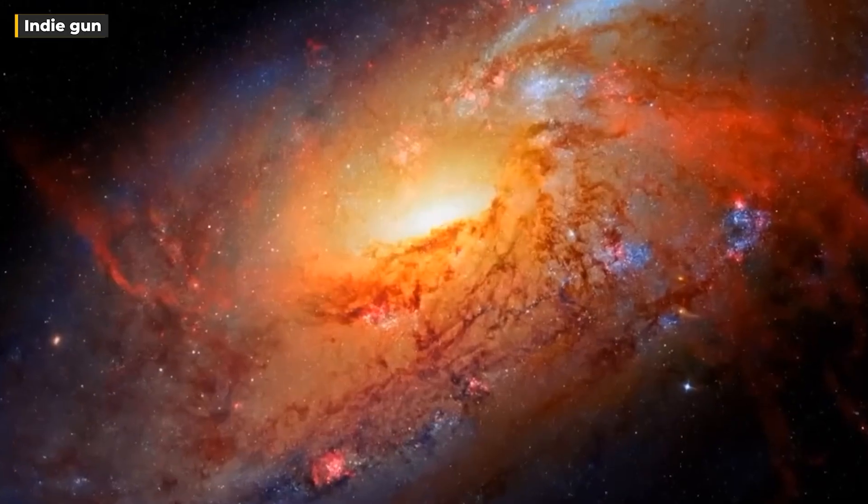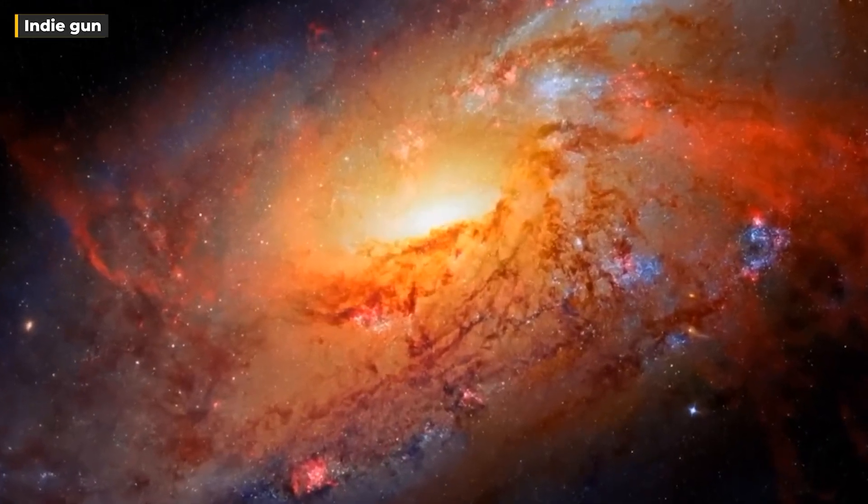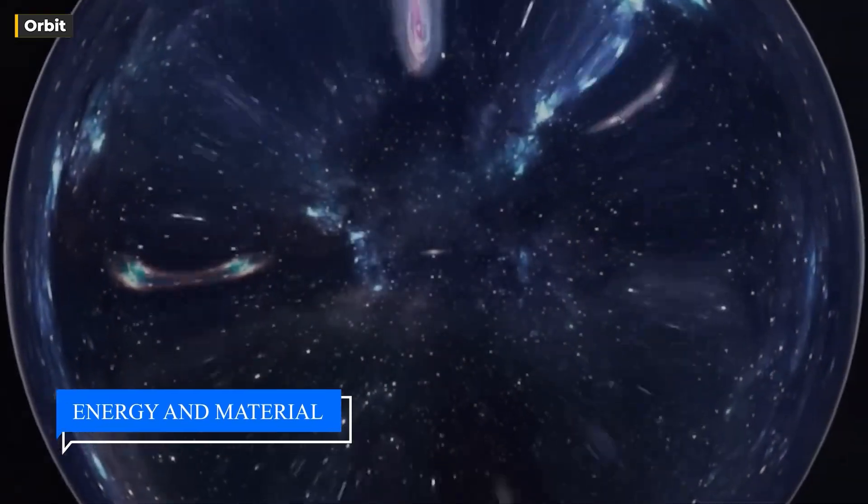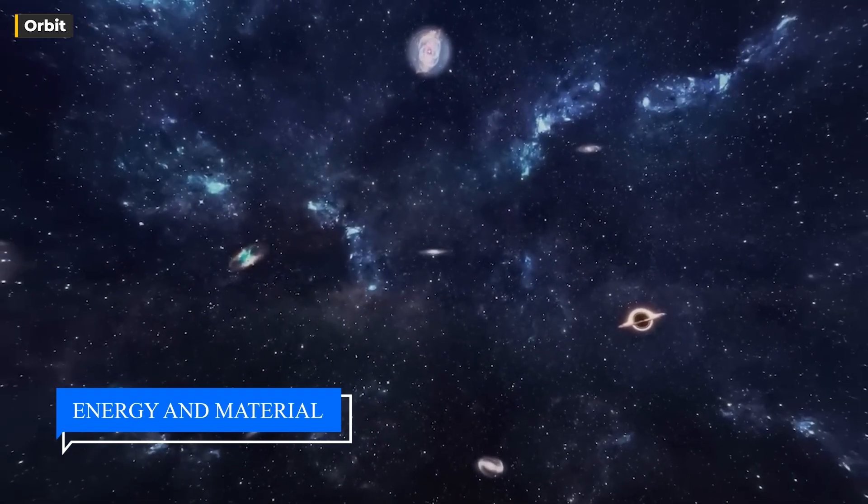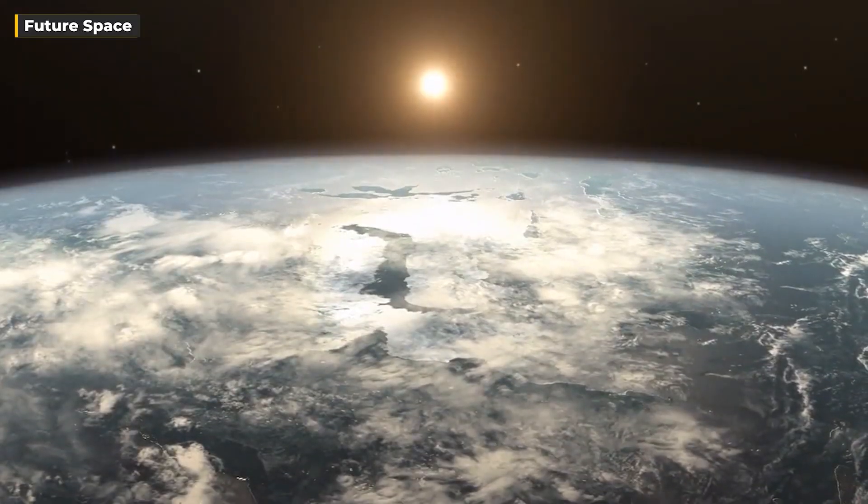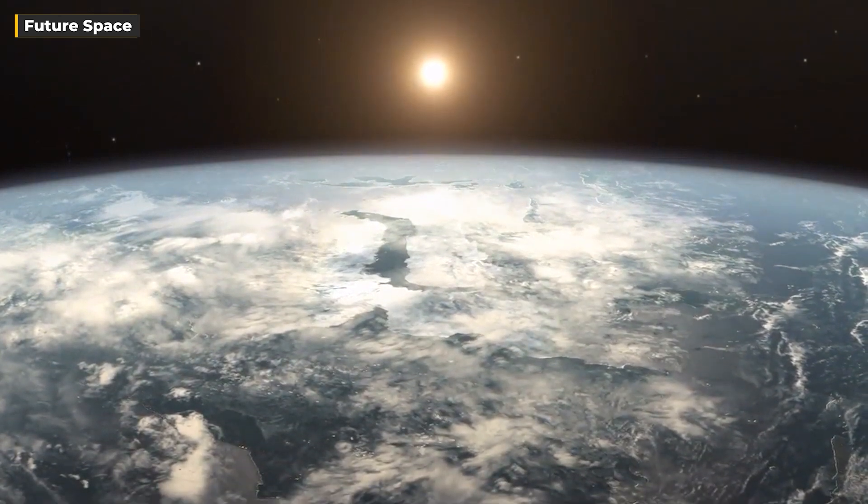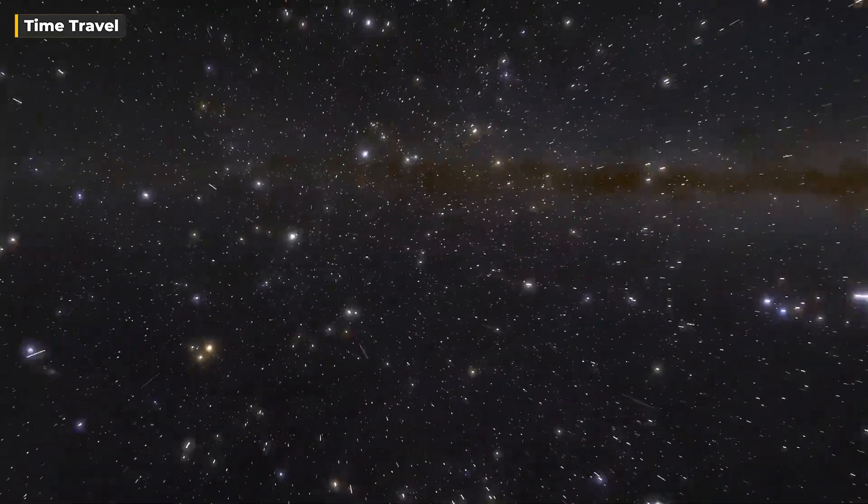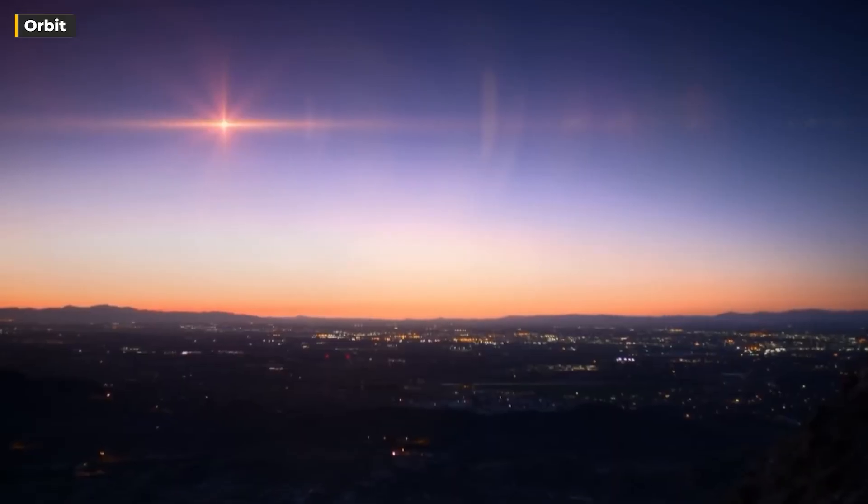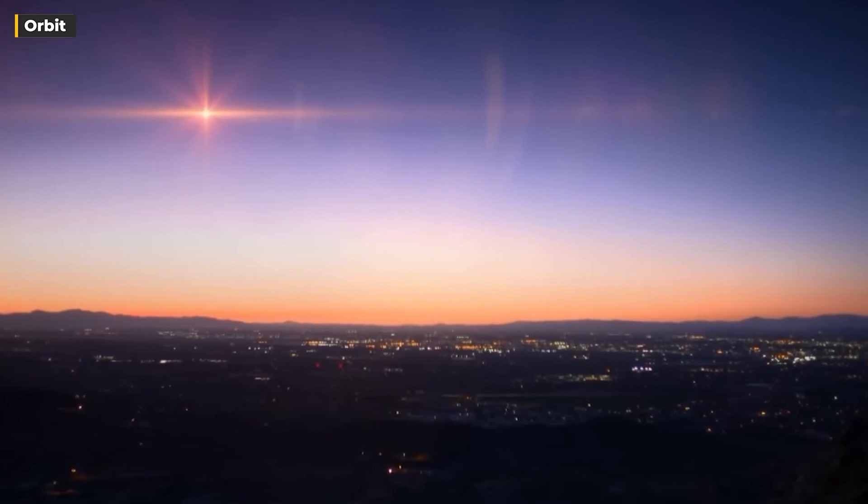Now, as stars like Betelgeuse reach the twilight years of their existence, they don't simply fade away into cosmic obscurity. Instead, they stage a dramatic exit, a supernova explosion. These cataclysmic events are a sight to behold, releasing a tremendous amount of energy and material into space. The last time Earth witnessed such a phenomenon up close was in the year 1604 when Kepler's supernova burst into view. It was an astonishing spectacle, its brilliance eclipsing all other stars in the night sky, and incredibly remaining visible during daylight hours for several weeks.